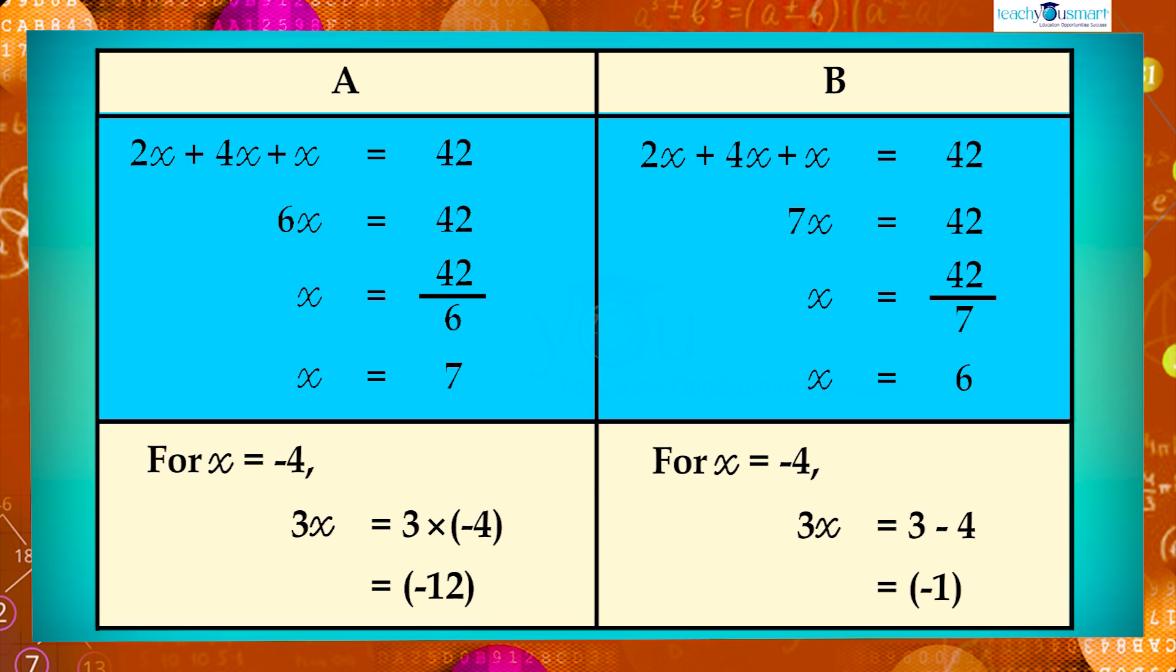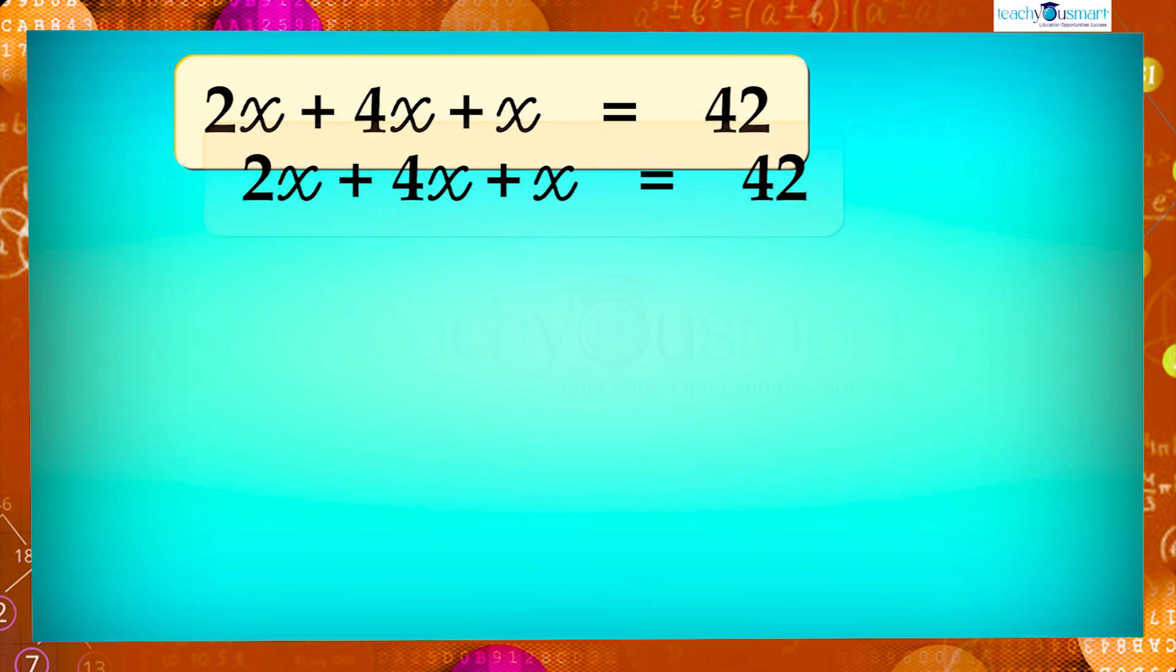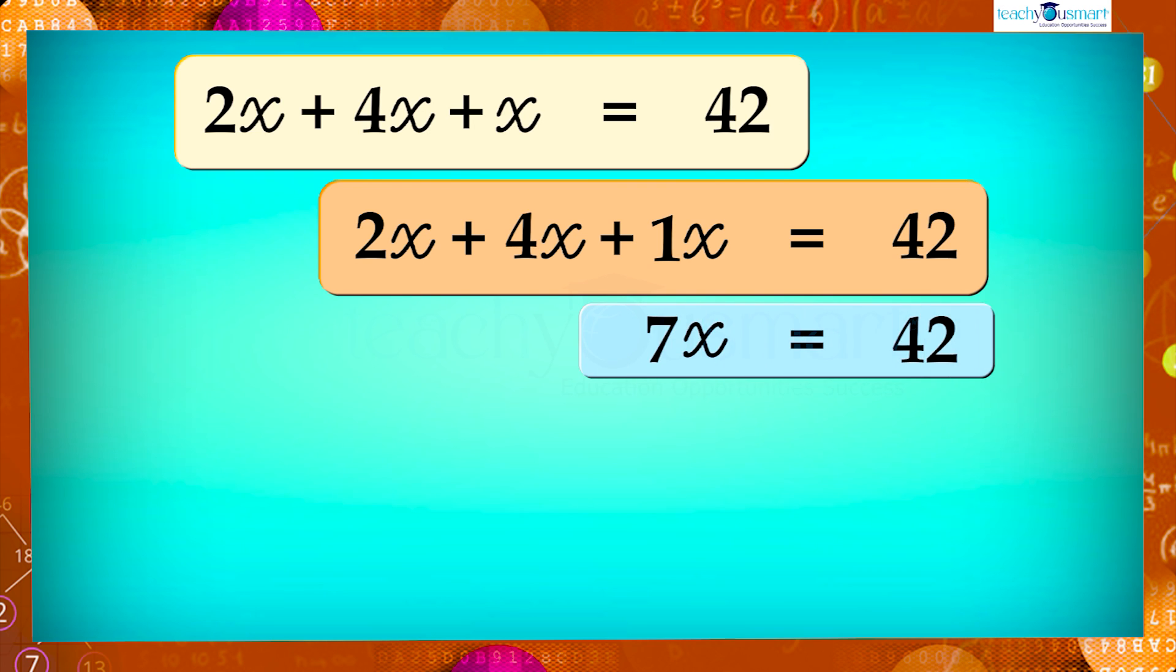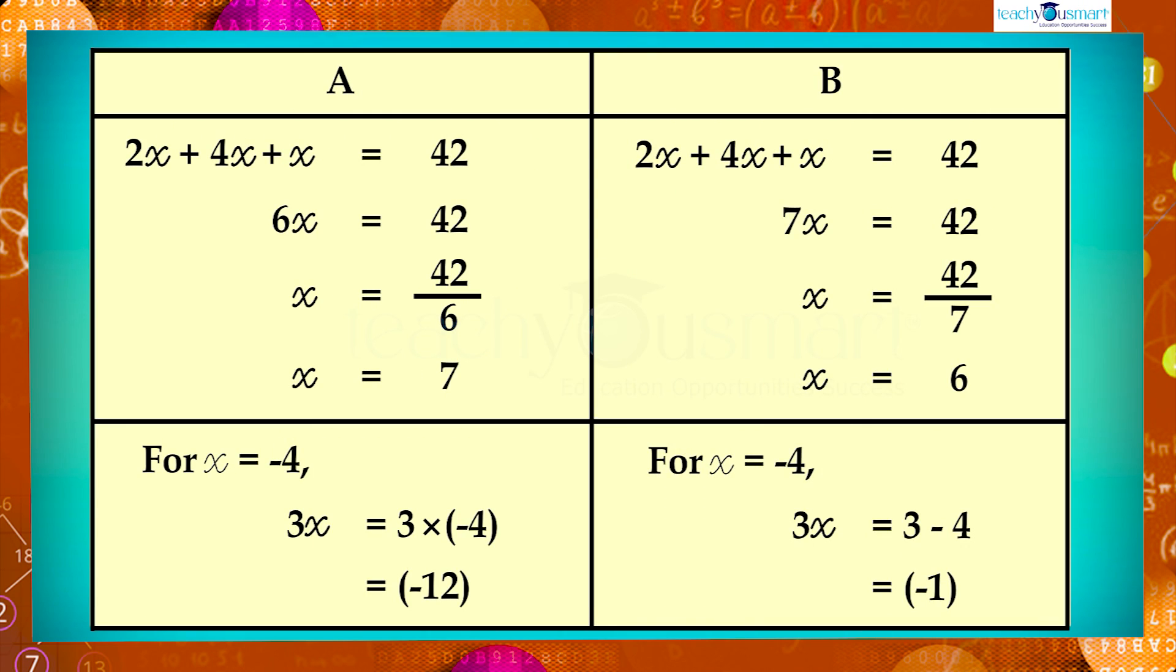Let's check. In 2x the coefficient of x is 2, and in 4x it is 4. Then in x the coefficient is not shown, but there is a coefficient which is 1. So while adding like terms we include 1x in the sum. That is 7x equals 42, or x equals 42 by 7, that is x equals 6. Therefore we can say B is correct and A is incorrect.